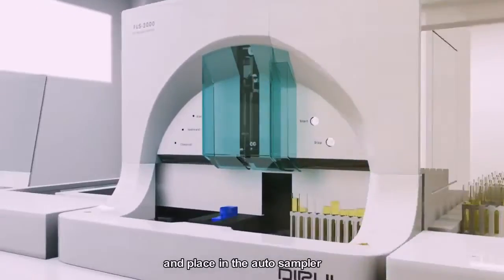Workflow of FUS-2000 Urinalysis Hybrid. Place the whole urine samples into the rack, and place in the auto-sampler. Select a test mode on the software, including dry chemistry analysis, urine sediment analysis, or combined hybrid analysis.